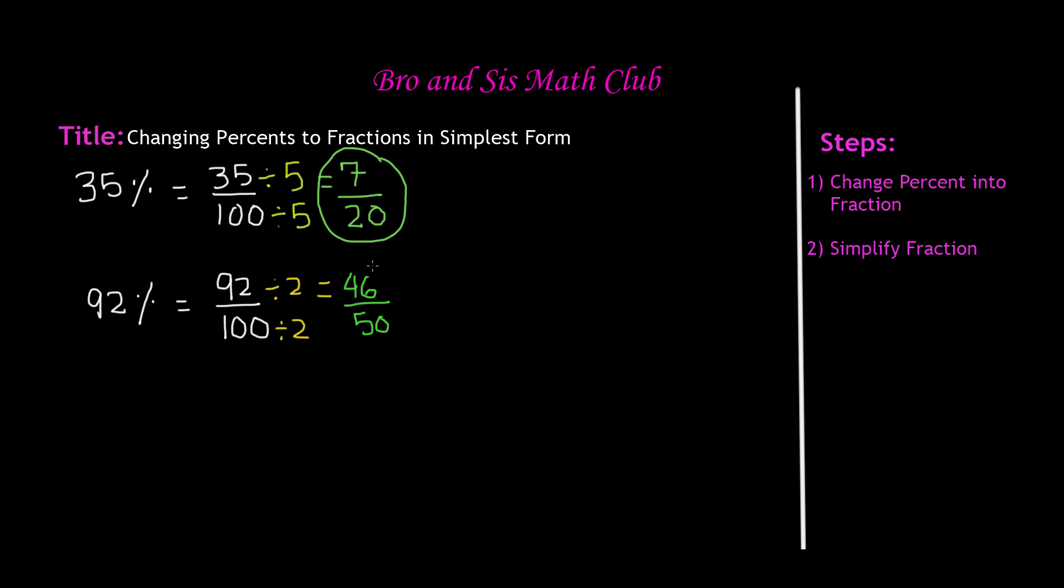Now, if we look at this, 46 and 50 can still be reduced further, and once again, we can divide them by 2 because 46 is an even number.